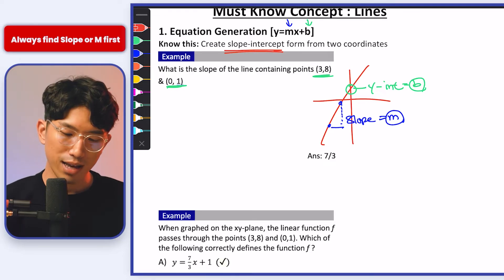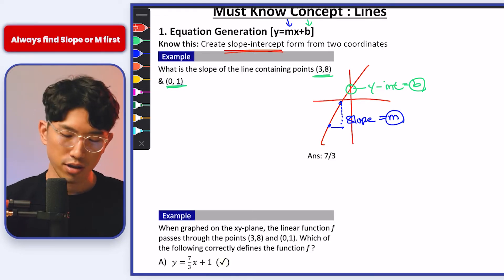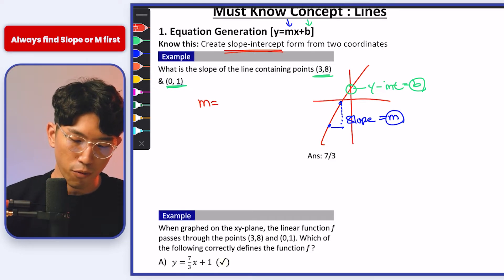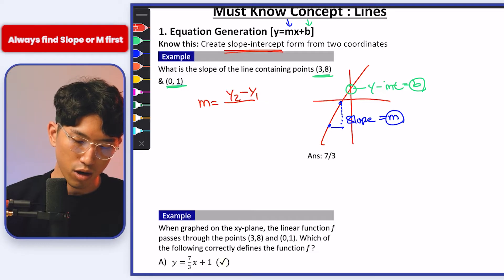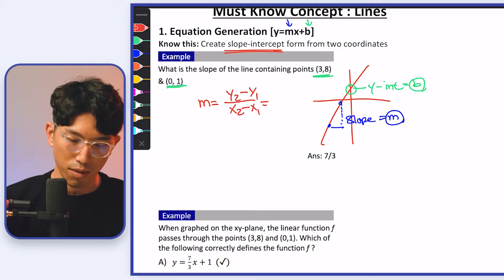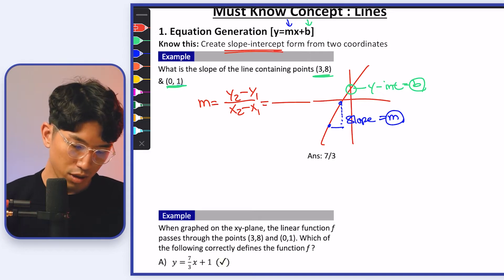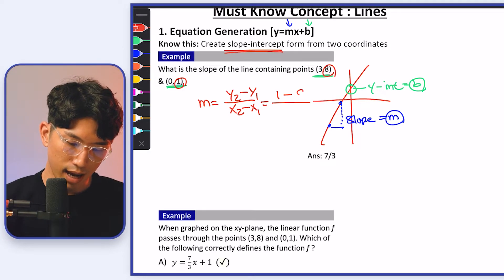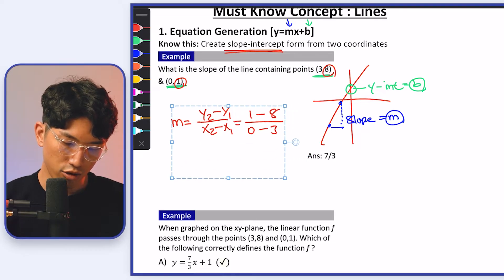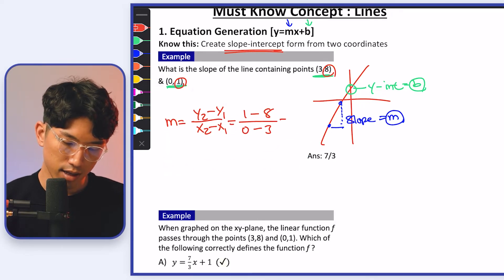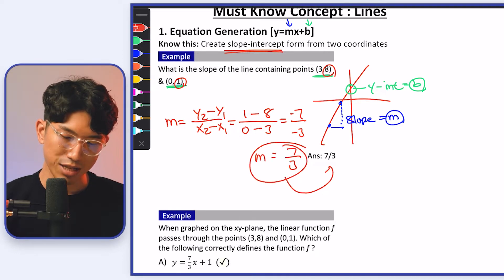You're always going to find the slope, or m, first. We're going to use the slope formula: y2 minus y1 over x2 minus x1. Plug the points in and you find out what the slope is. So y2 is 1, y1 is 8 — it's going to be 1 minus 8 over 0 minus 3. If you do that, you get negative 7 over negative 3, which means your slope is going to be positive 7 over 3.